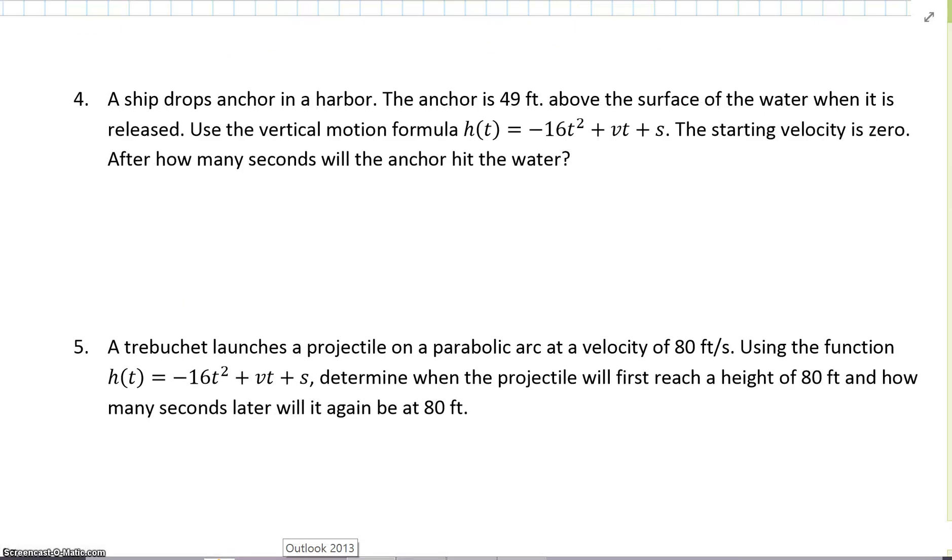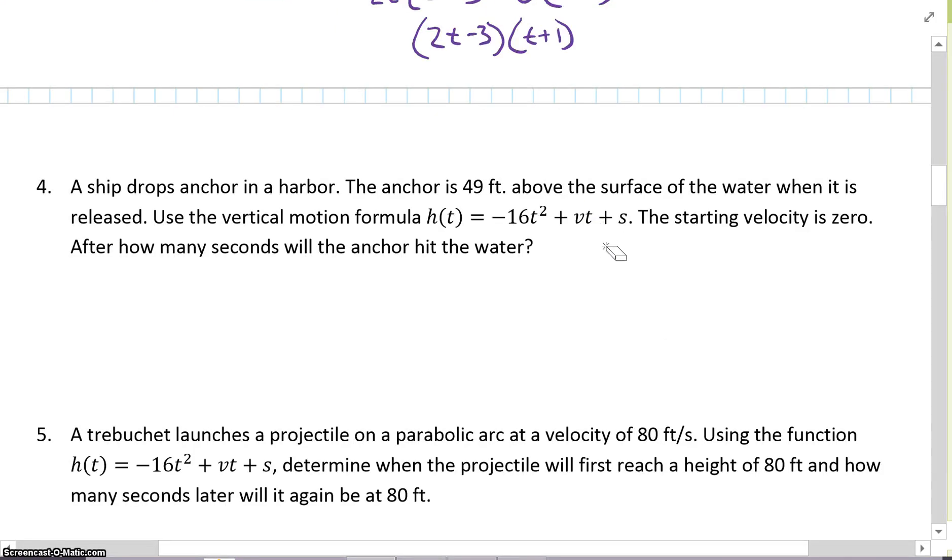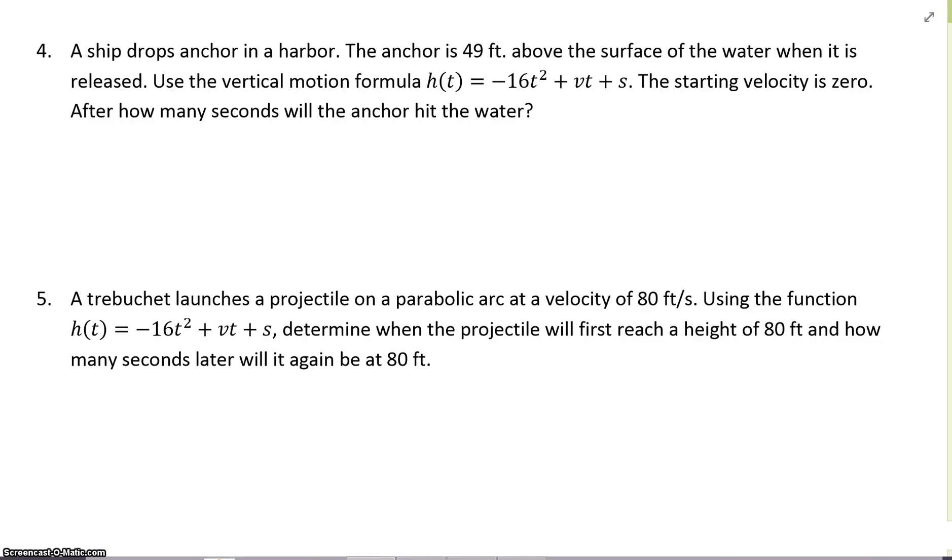Number 4. A ship drops anchor in the harbor. The anchor is 49 feet above the surface of the water when it is released. Use the vertical motion formula -16t² + vt + s. The starting velocity is 0. How many seconds will the anchor hit the water? The anchor is 49 feet above. My initial velocity is 0. So h(t) = -16t² + 0t + 49. Let's rewrite this: -16t² + 49. We want it when it equals 0 when it hits the water.